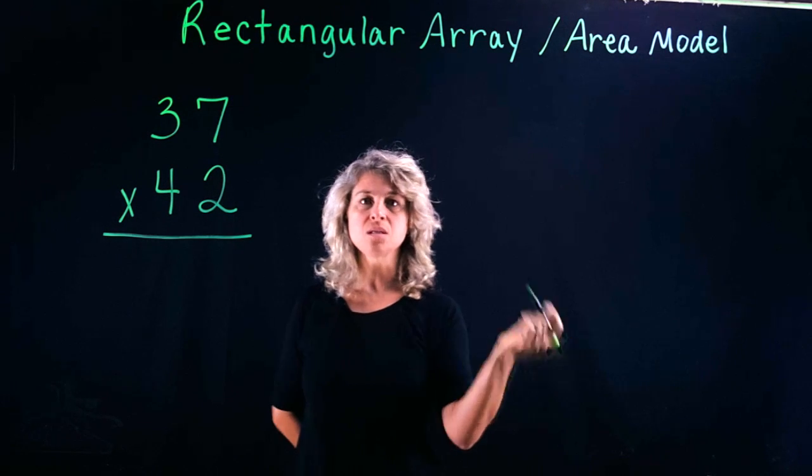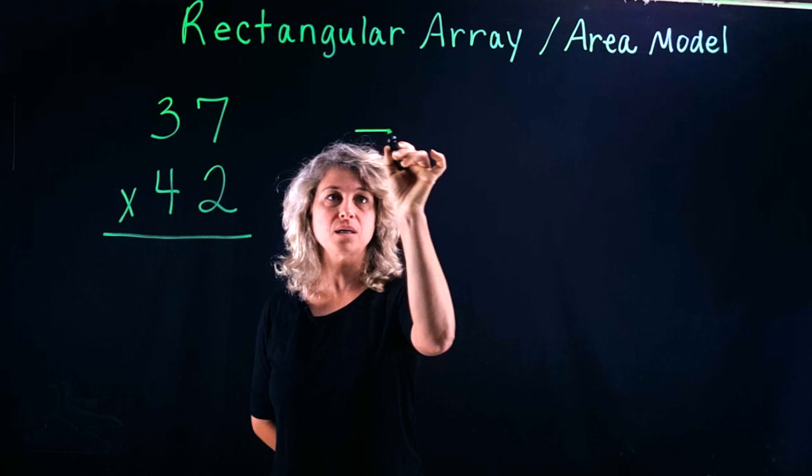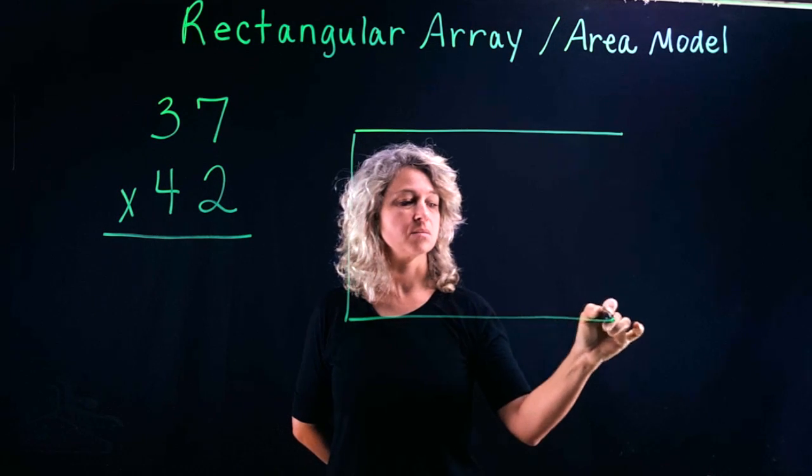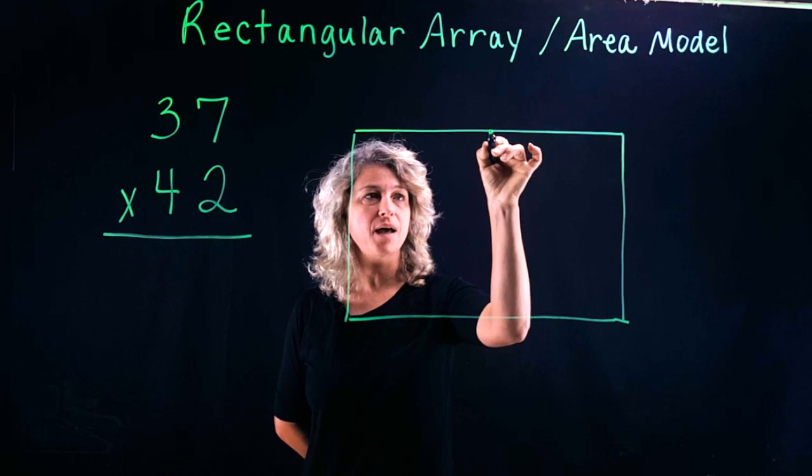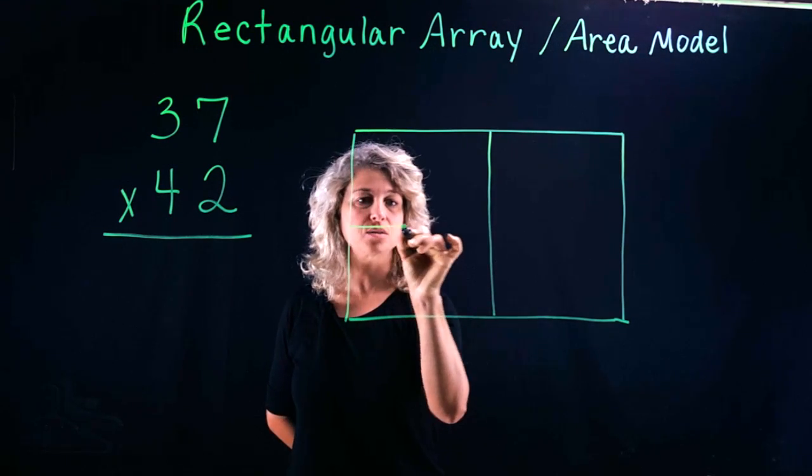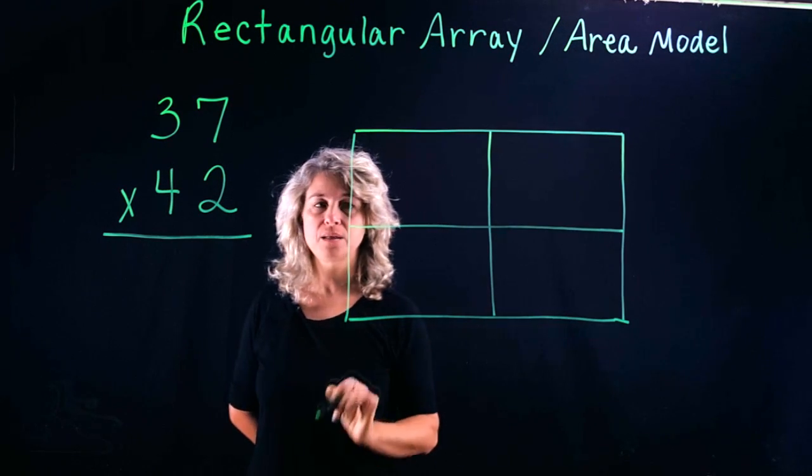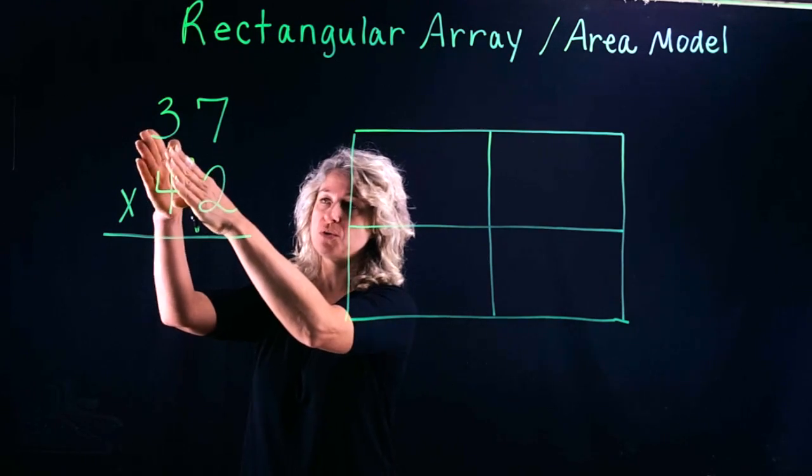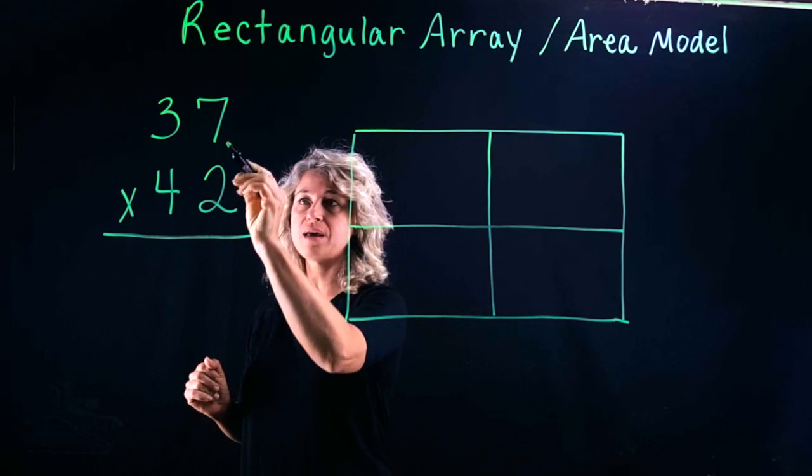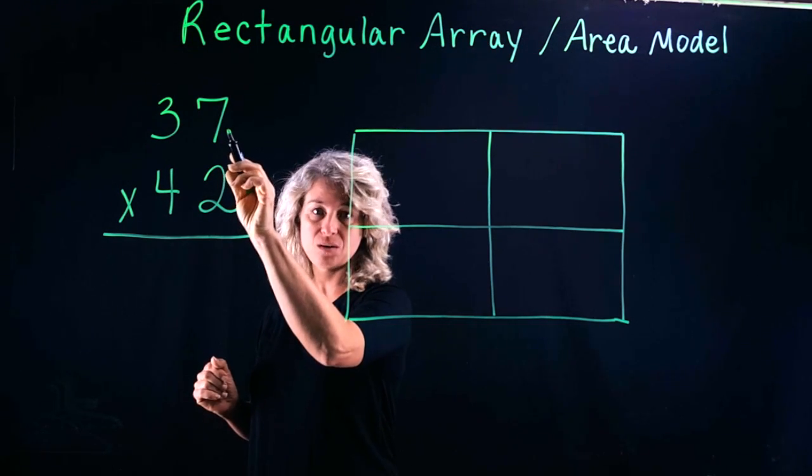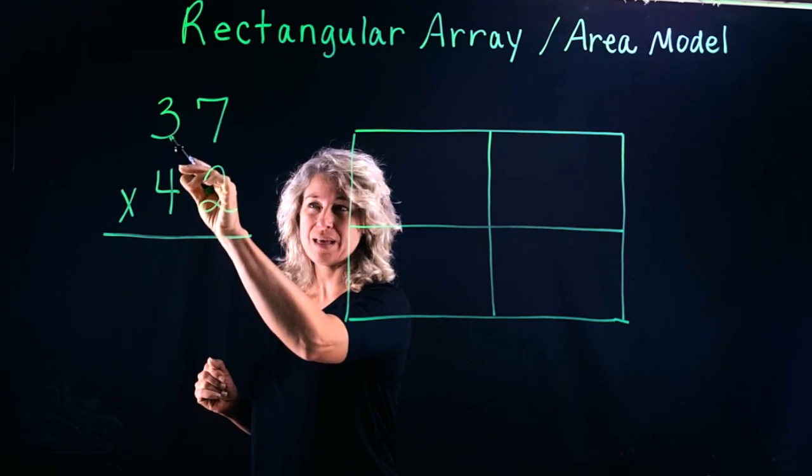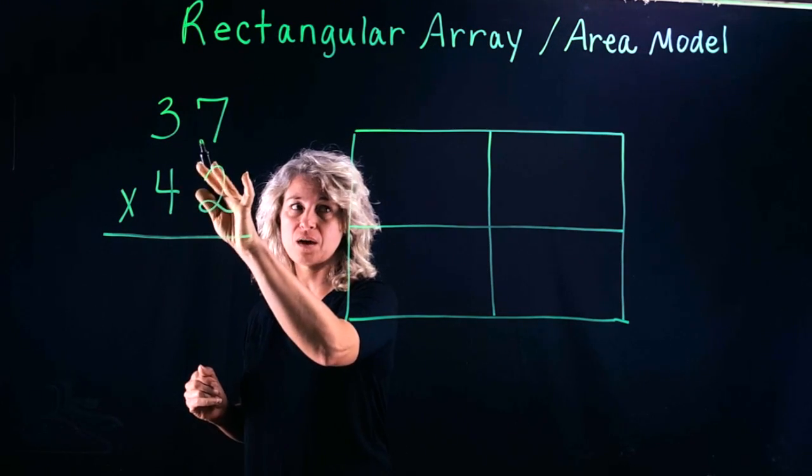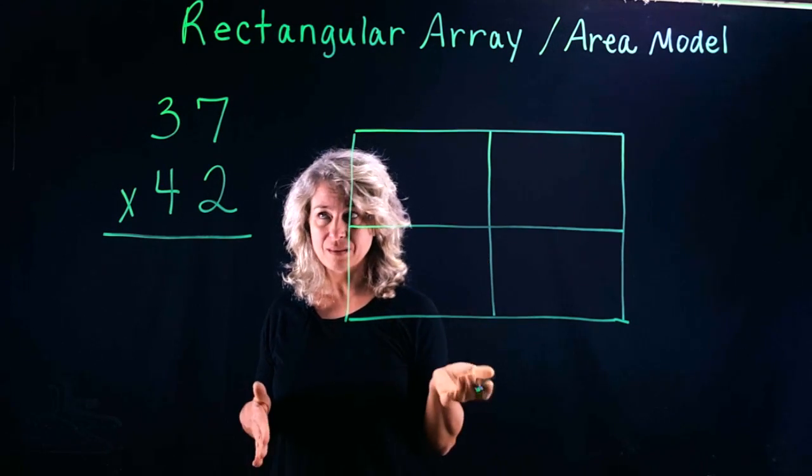The first thing we'll do with the box method or rectangular array method is we're going to draw the box and divide it into four sections. Now you'll have to use your previous understanding of place value in order to set this up. Look at your first number, 37. We know that 7 means there are seven ones, and we know that 3 is in the tens place and is not worth three, it's worth 30.